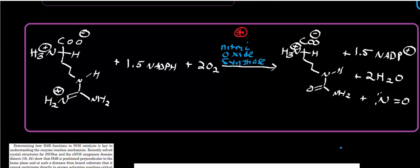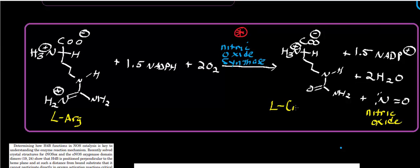We're going to start out with a molecule of L-arginine — the amino acid L-arginine. We're going to use three halves of NADPH, in other words three halves of the total electron reducing equivalent, two molecular oxygens, and we'll get out NADP+, two waters, nitric oxide, and L-citrulline. We'll talk about that amino acid's fate later.